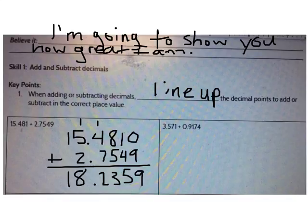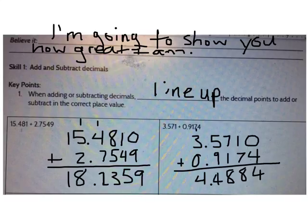What is 3 and 571 thousandths plus 9 and 174 ten-thousandths? Go ahead and solve that problem now. The correct answer is 4 and 4884 ten-thousandths.